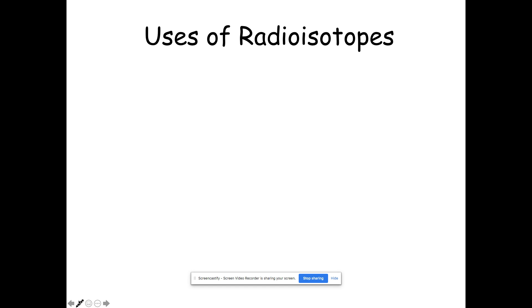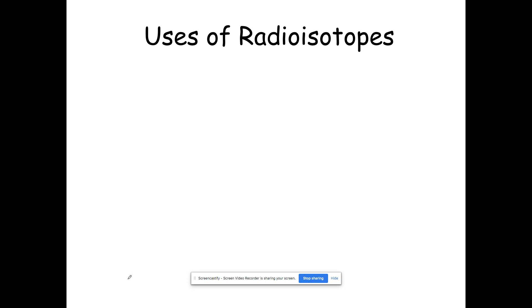Hello, for another edition of nuclear chemistry. We are in the last chunk of the unit, and this covers some practical applications — why we learn about nuclear chemistry, what's so great about it. We've been talking about why things decay and what happens when they decay, but why do humans care about them at all? Because they can really help us in certain ways. Here are some common radioisotopes and how we as humans use them.